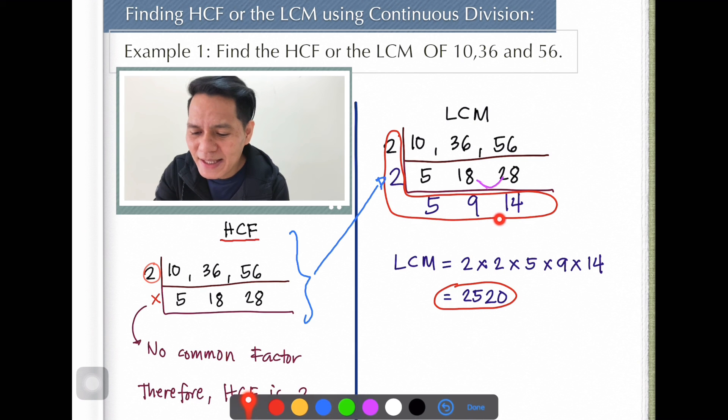See? That's letter L. In other words, that is our LCM. Then we multiply them. 2 times 2 times 2 times 5 times 9 times 14. So there you go. The product there is the LCM, the least common multiple.